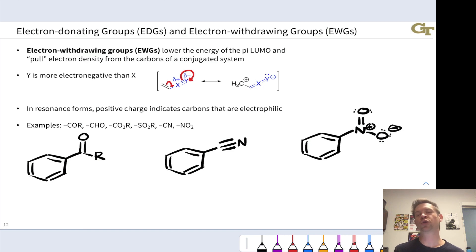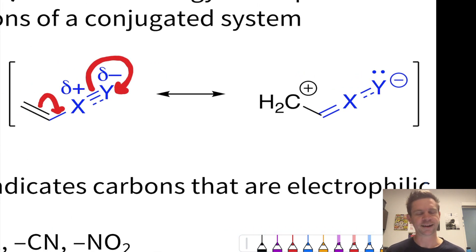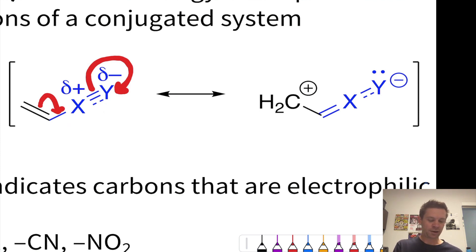Electron withdrawing groups lower the energy of pi molecular orbitals by pulling electron density out of conjugated systems. Their structure is a bit more complicated than electron donating groups, but one we can still readily understand. An electron withdrawing group has the general structure of an X-Y double or triple bond where the Y atom is more electronegative than the X atom. This makes the X-Y bond polarized toward Y, with partial negative charge on Y and partial positive charge on X.